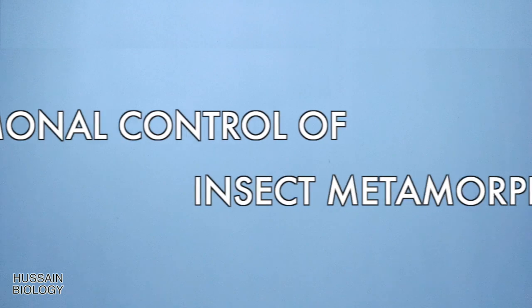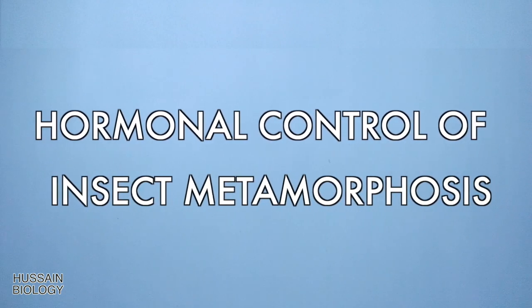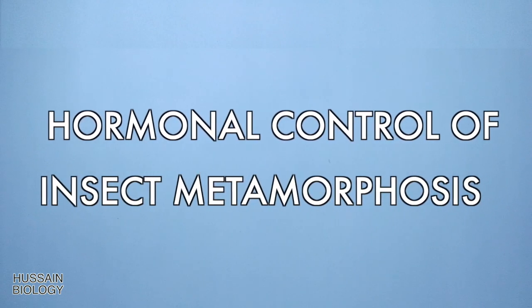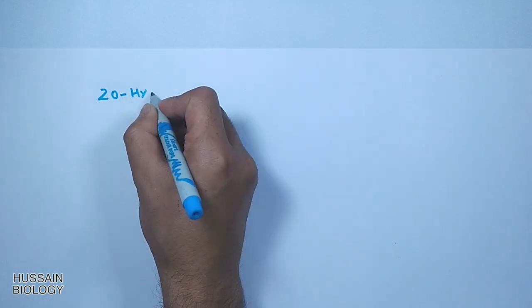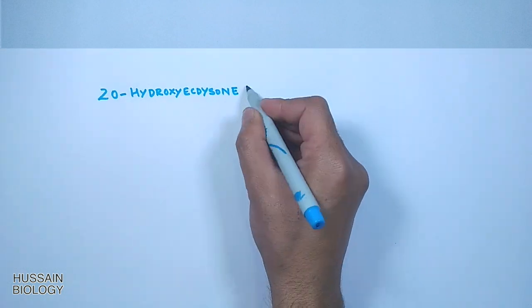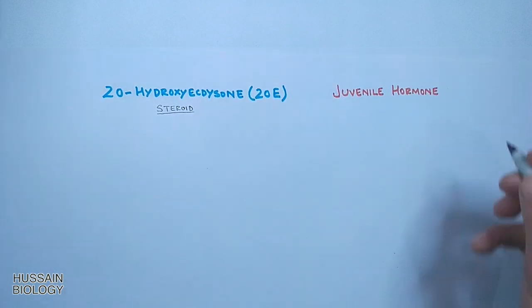In this video we will be discussing the hormonal control of insect metamorphosis. There are mainly two hormones which drive insect metamorphosis: the first one is 20-hydroxyecdysone and the second one is juvenile hormone.